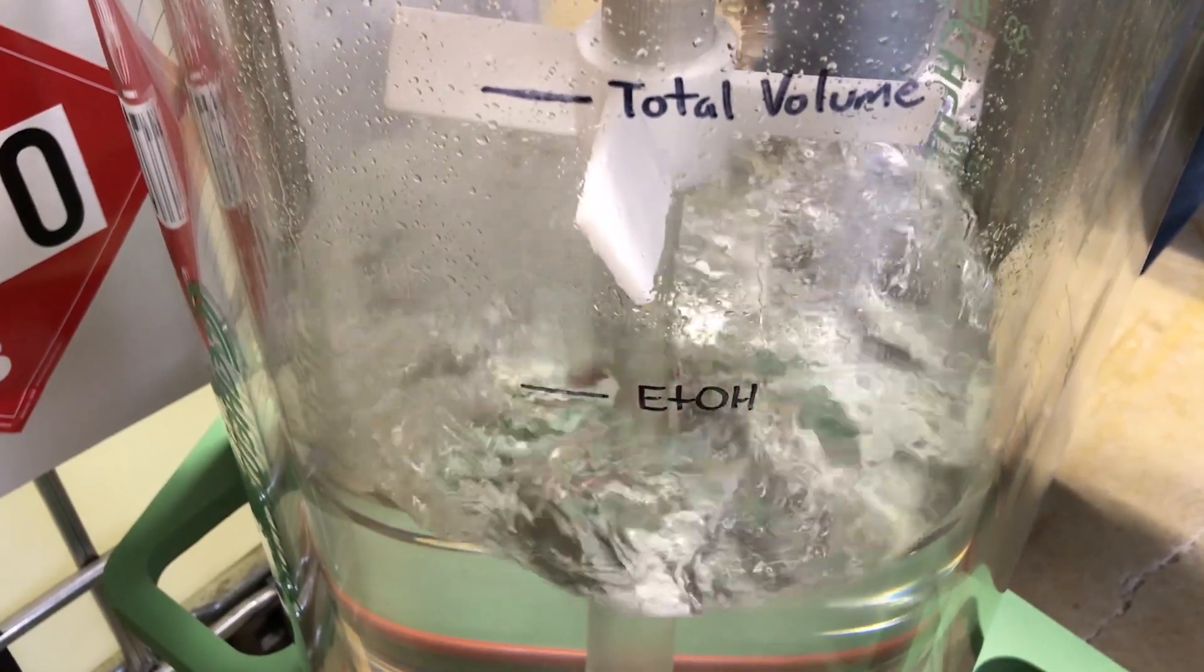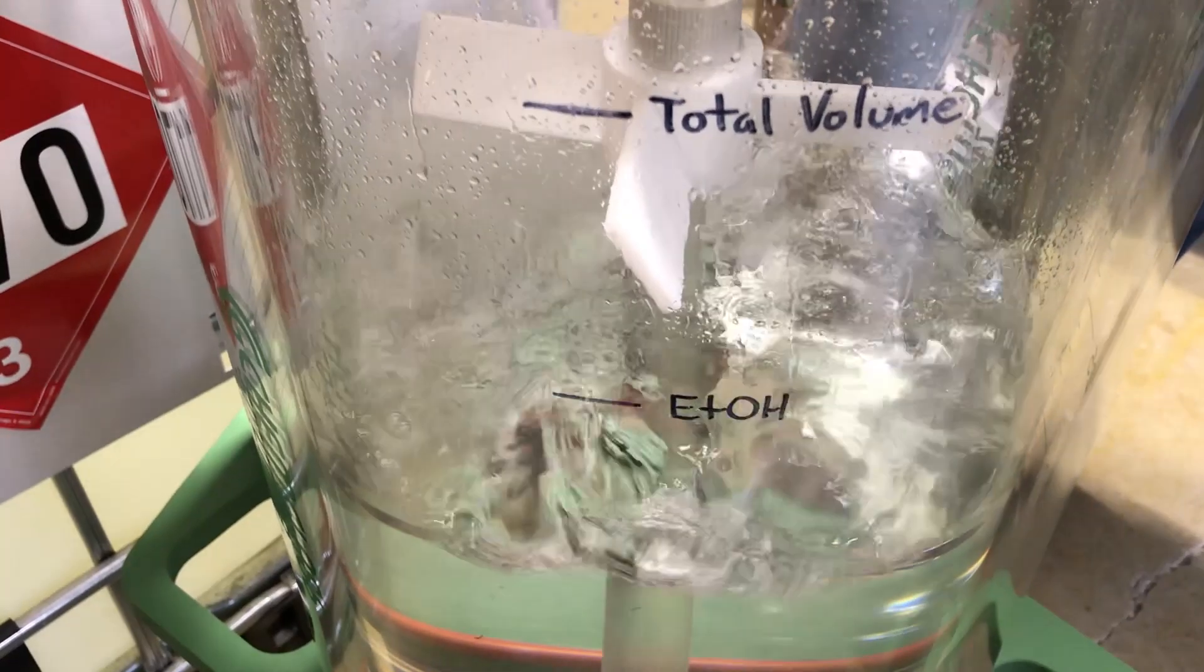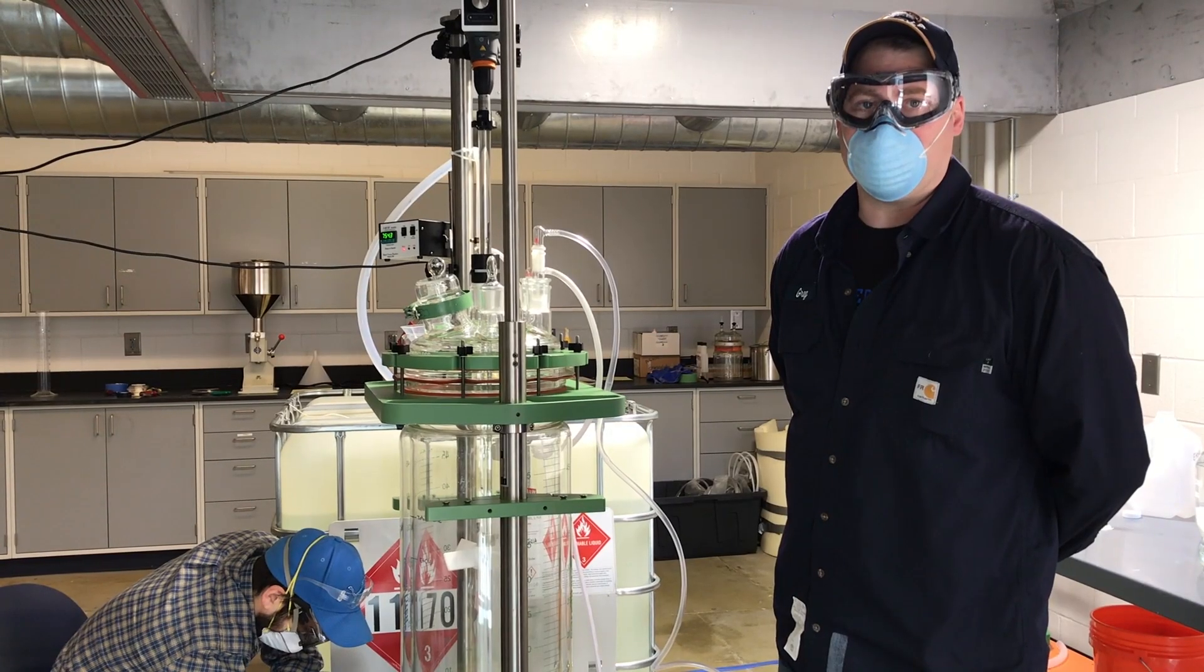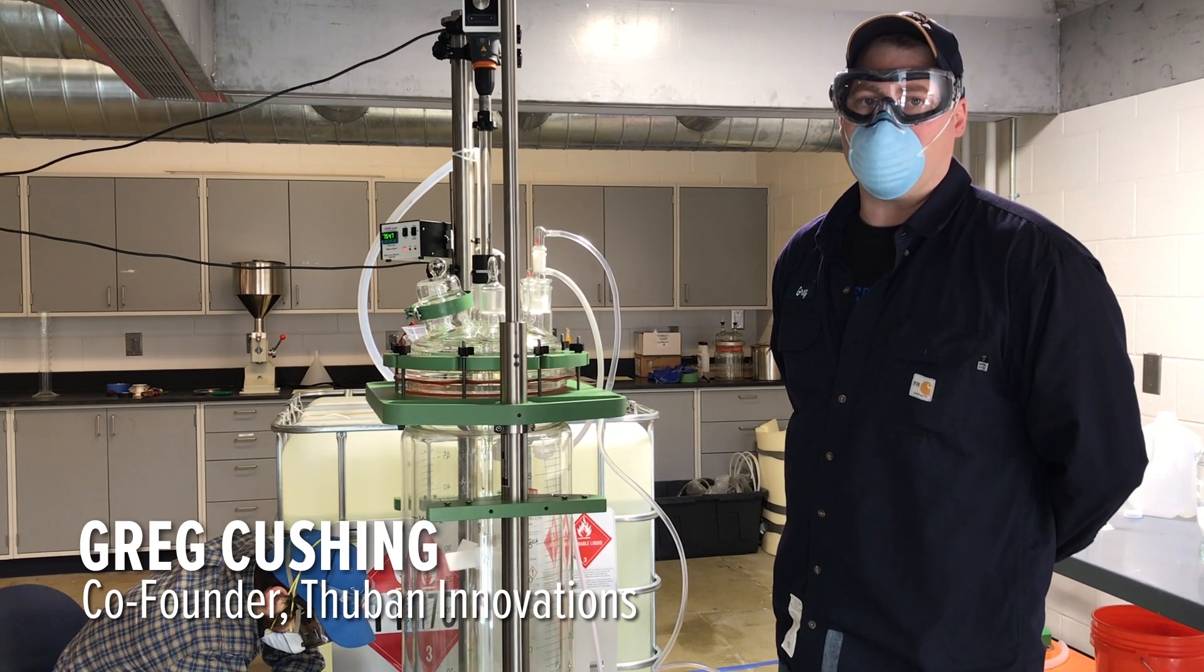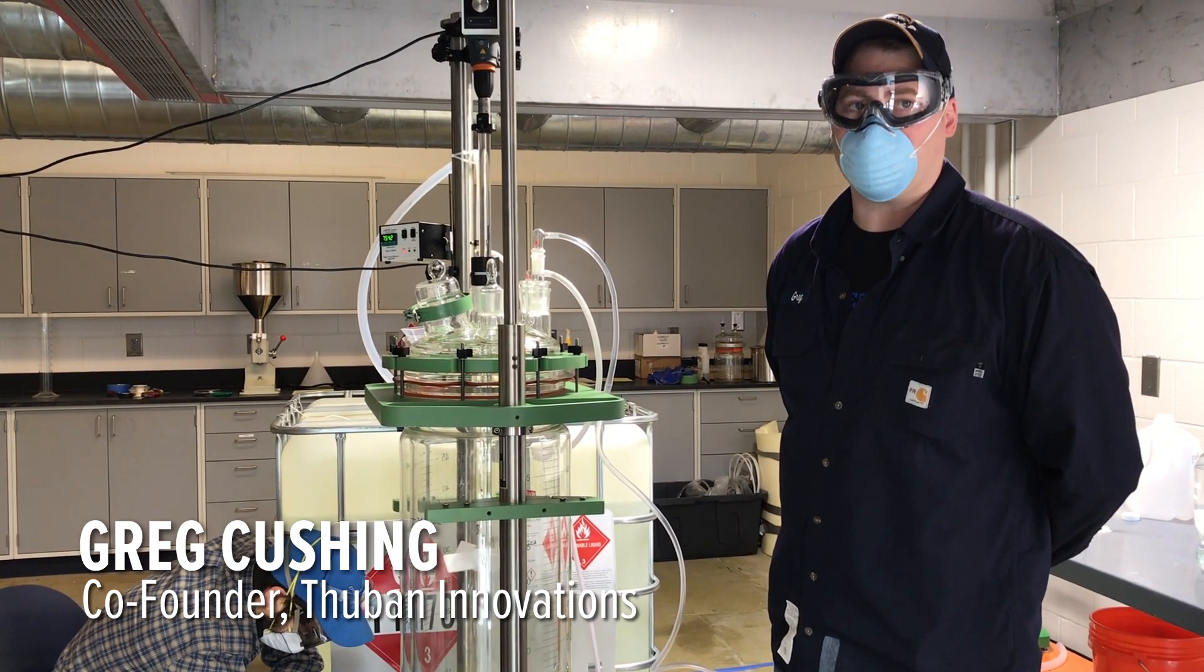We're making hand sanitizer according to the FDA recipe that uses ethanol, isopropyl alcohol for denaturant, hydrogen peroxide, glycerin, and water.